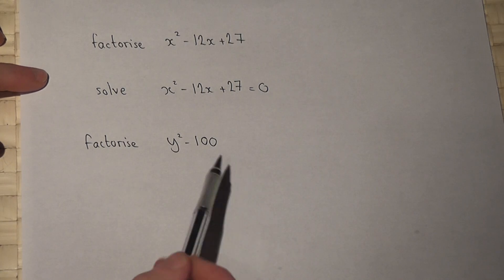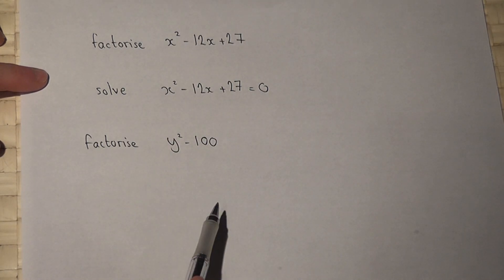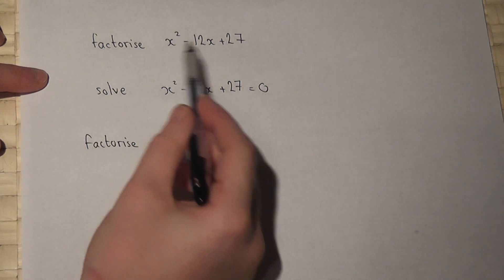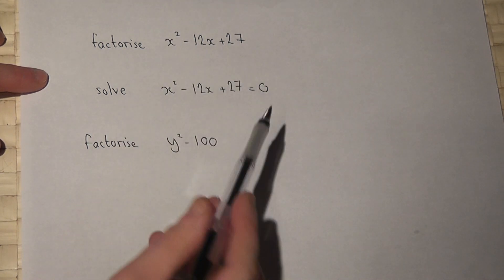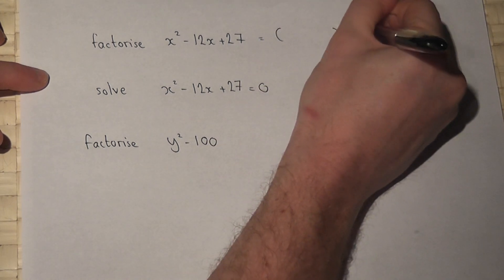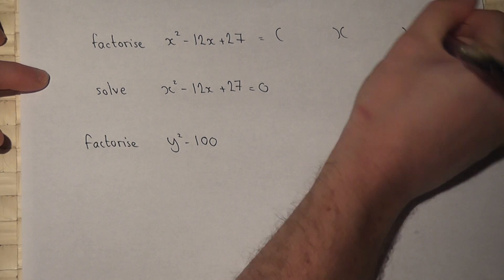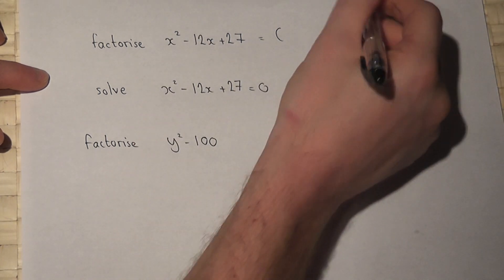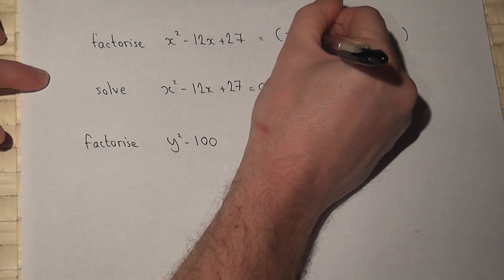This video reviews three examples involving factorizing. The first question is x² - 12x + 27. This is one of the double bracket types of factorizing. There's an x² term, so we need an x and an x.